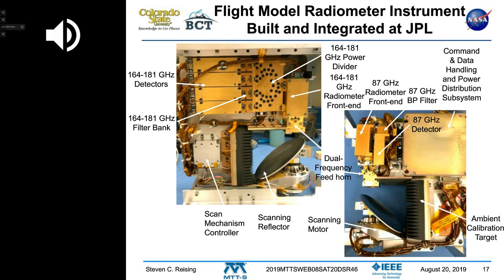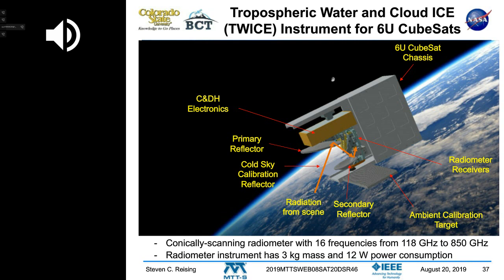That will test sub-millimeter wave frequencies for measuring ice clouds. The instrument can also be paired with radars to get higher vertical resolution in clouds. Pairing this with a radar for a small satellite would be a great future project for NASA.